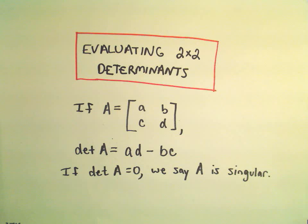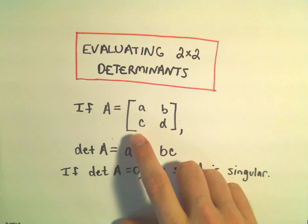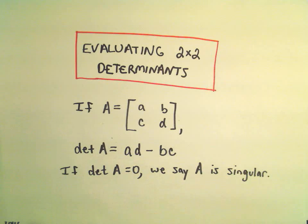Alright, in this video we're going to do a few examples related to finding 2 by 2 determinants of a matrix. So, the idea is if your matrix A has entries a, b, c, d, to calculate the determinant of that matrix...